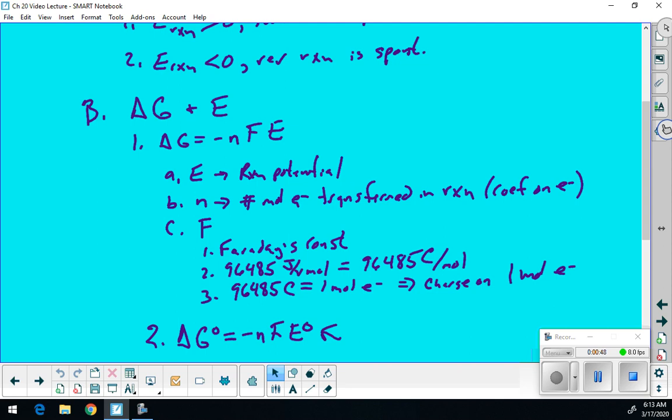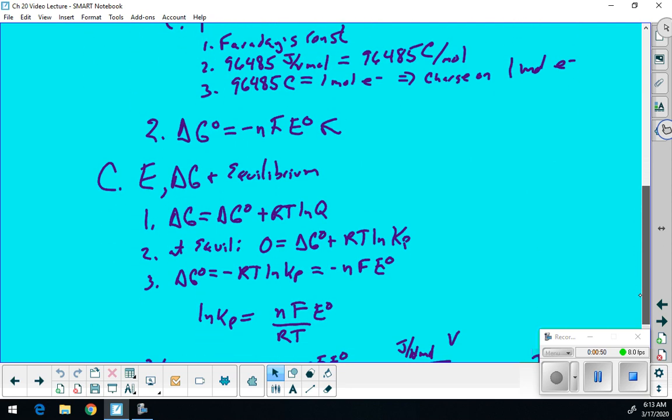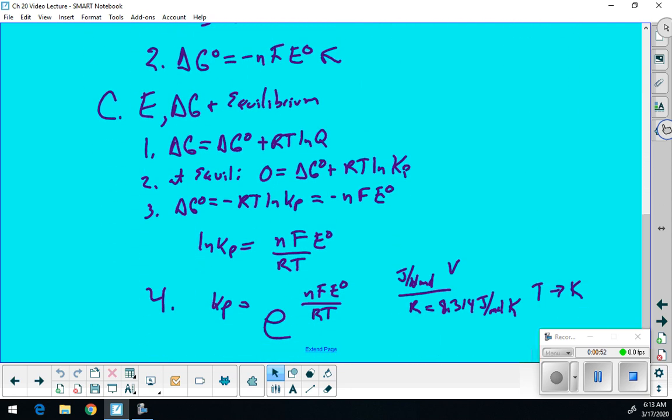And then we could also relate that to equilibrium K, right? We could relate that to K, and my Kp would be E to the nFE prime over RT, which is just another way to state what we did before with delta G. We said Kp is equal to E to the negative delta G prime over RT. Always watch your units on that.